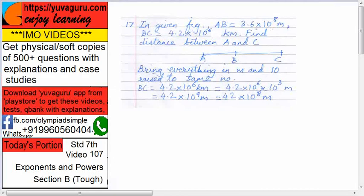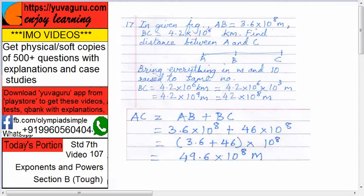Now AC, that is simple now. AC equals to AB plus BC. So 3.6 into 10 raised to 8 plus 46 into 10 raised to 8. Take 10 raised to 8 common, because plus sign is there, you can take one which is same as common. So 3.6 plus 46 into 10 raised to 8, this totals out, it comes out to be 49.6 into 10 raised to 8 meters. That is the required answer.